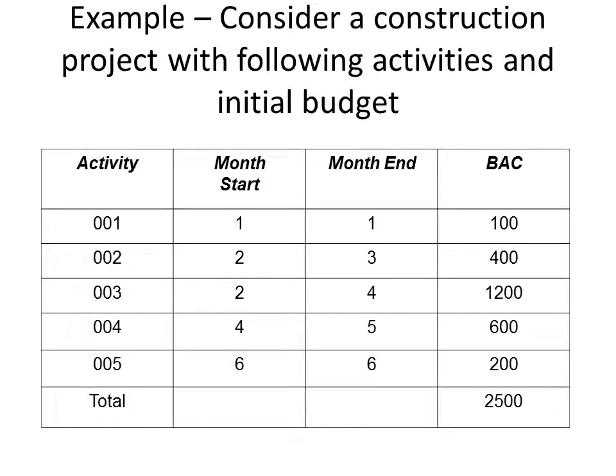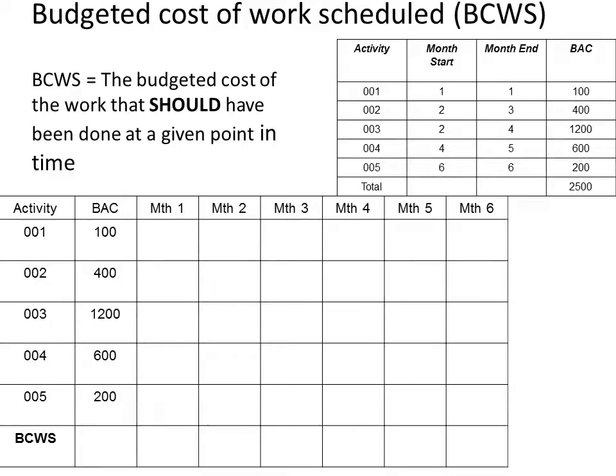Now let's take an example to make earned value management and key calculations more clear. Consider a construction project with five key activities and an initial budget. Activity one starts and finishes at month one with a budgeted cost of $100,000. Activity two starts at month two and finishes at month three with a budget of $400,000. The total budget for this project is $2,500,000.